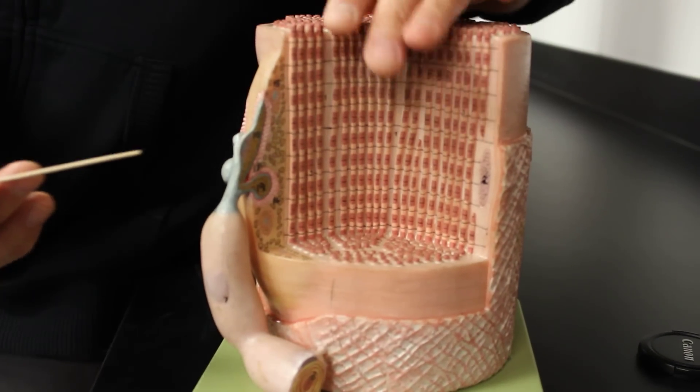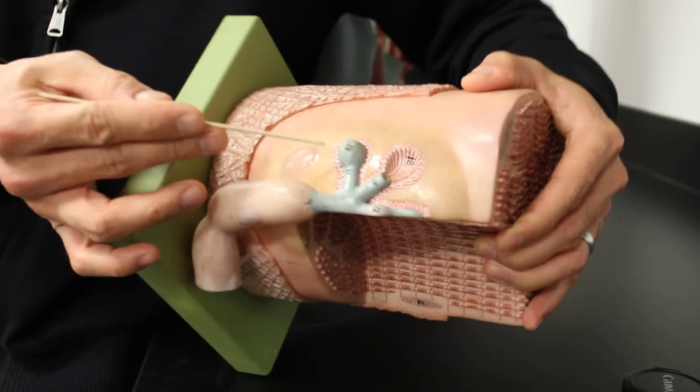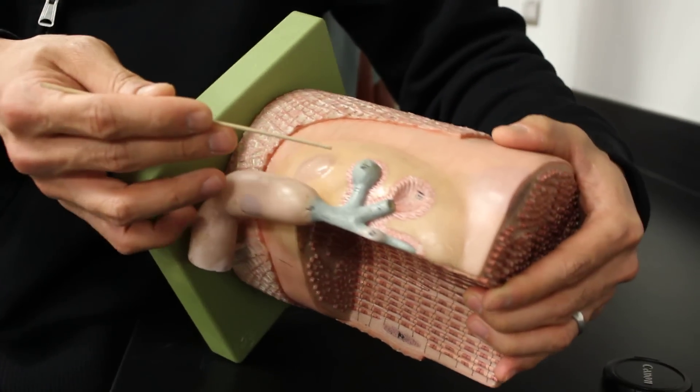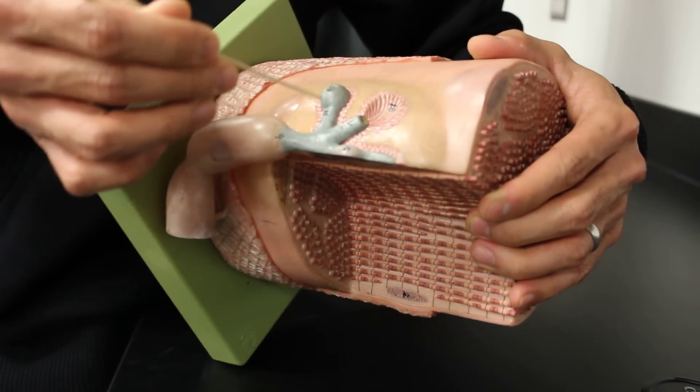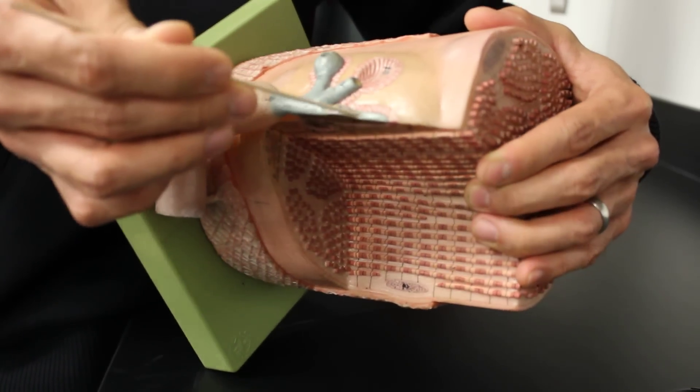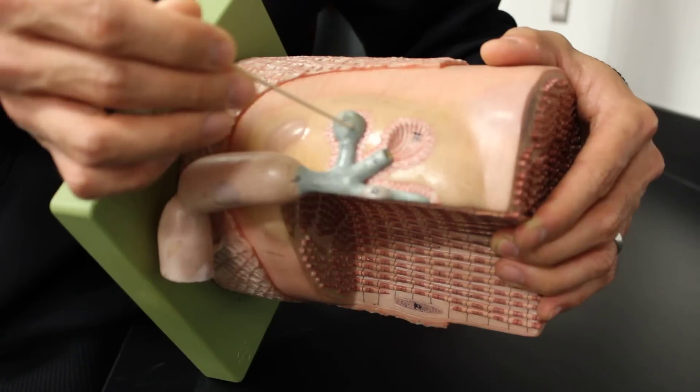The other thing that's significant on this model would be this area right here. This is the neuromuscular junction. If you can see this is the nerve itself covered over by Schwann cells and then ending at synaptic terminals. These little big buds here are synaptic terminals.